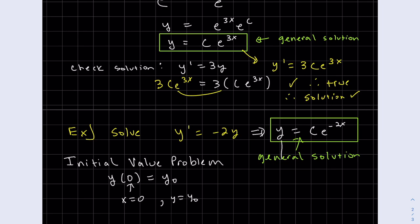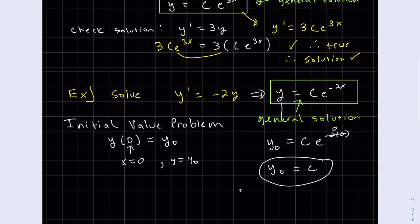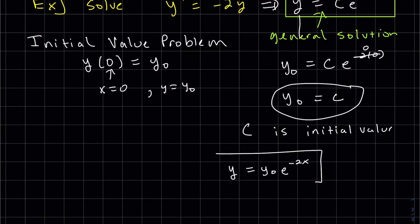So here, x is equal to 0 and my y value is y_0. So my y is y_0, c e to the minus 2 times 0. That is just e to the 0, which is just 1. We get y_0 equals c. So the point of this procedure is so you can see that y_0, which is my initial value, turns out to be c. So c is my initial value. And whatever value this initial value was, that is my particular solution.